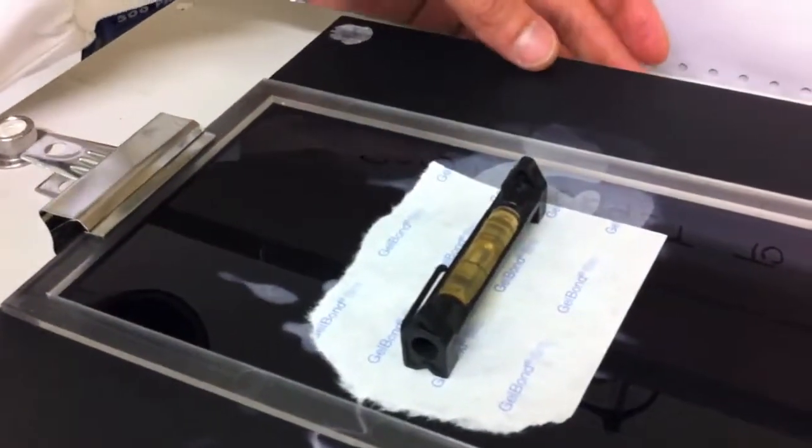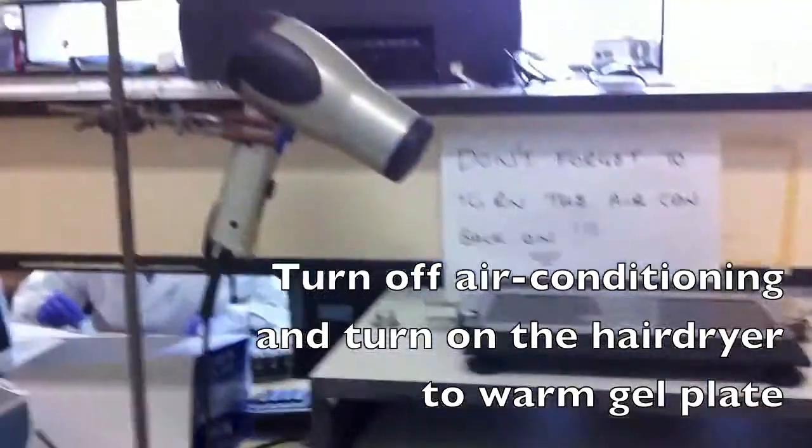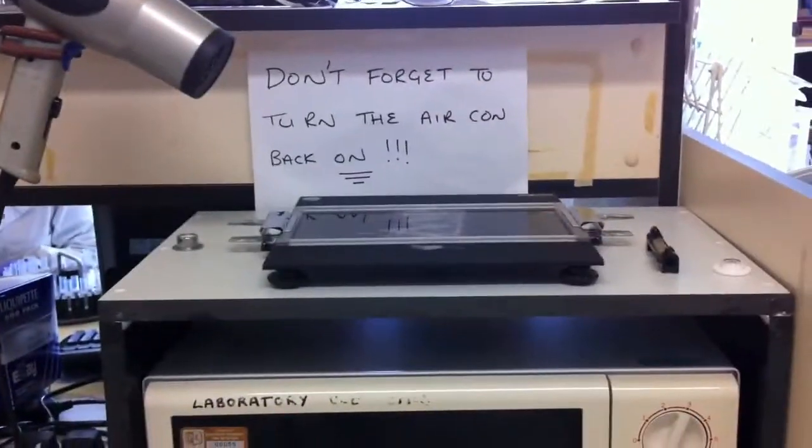Next, with the spirit level running front to back, use the rear dial to once again balance the bubble in the centre of the spirit level. Next, turn off the air conditioning and turn on the hairdryer to warm the gel plate.